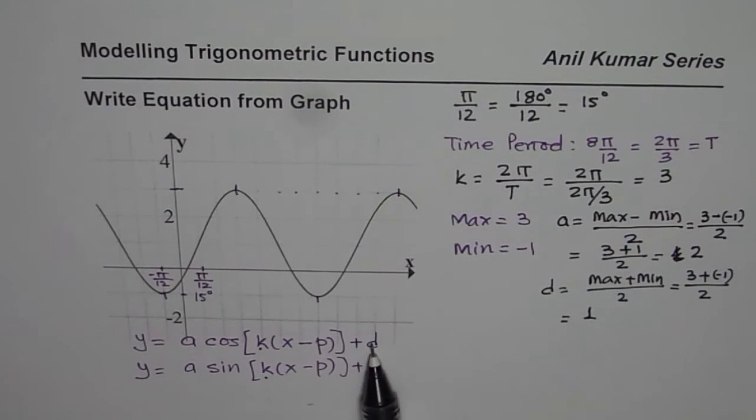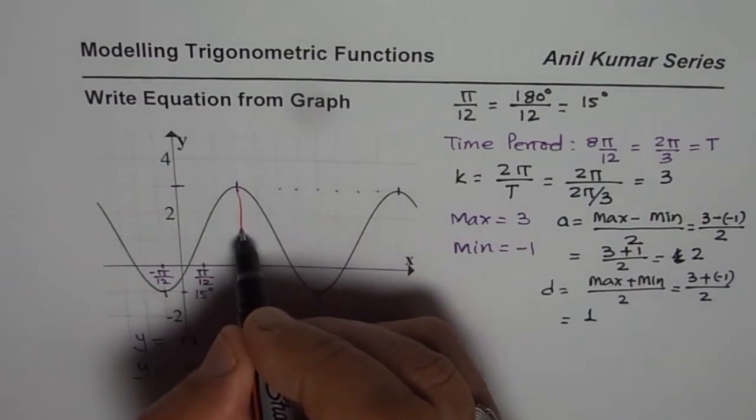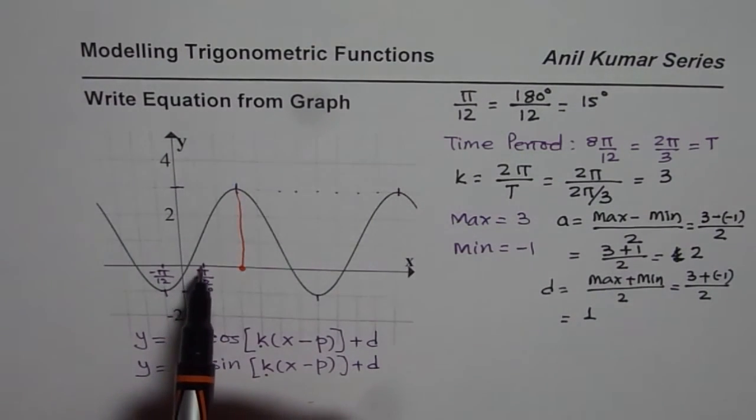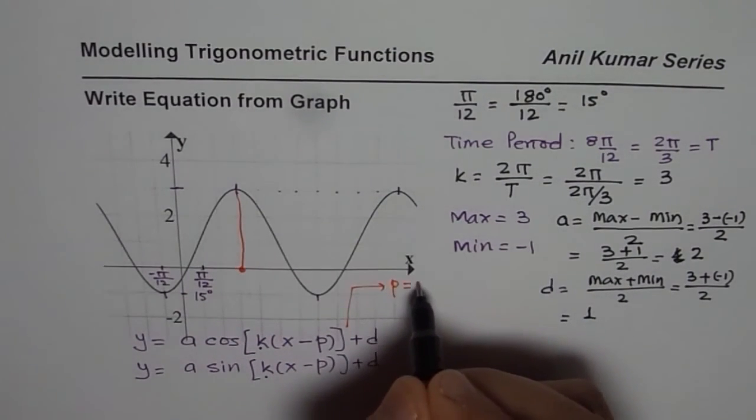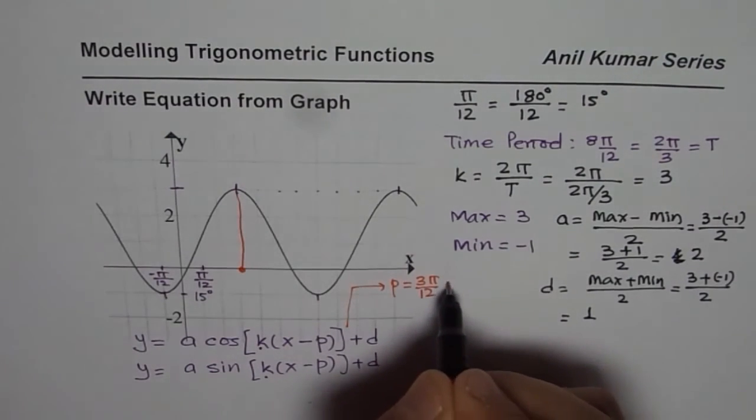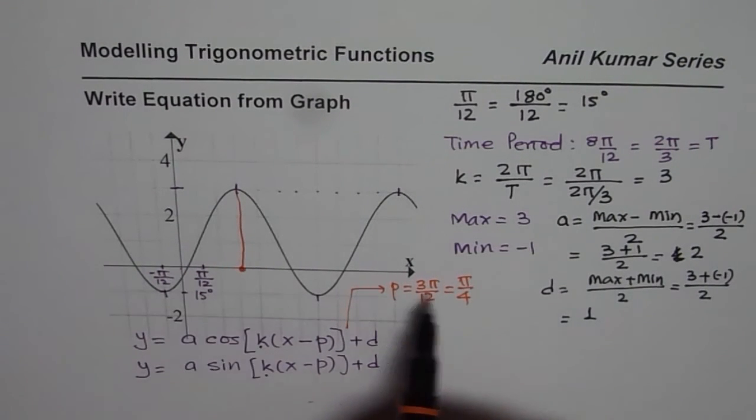Now what else we need to find? We need to find what p is, the phase shift. Phase shift is specific to the equation itself. If you want to write equation in terms of cosine function, in that case you need to see the first maximum. In our case first maximum is right there. The starting point for the first maximum is 1, 2, 3 π/12. So for cosine, p = 3π/12 which I could write as π/4. So that is for cosine function, many units to the right, so it is a positive value.